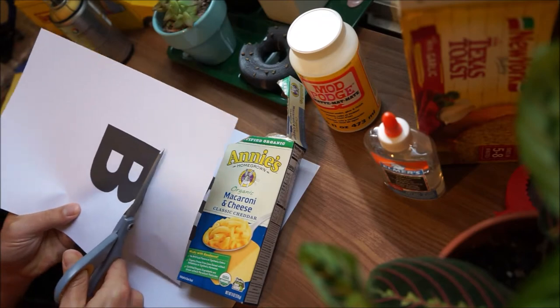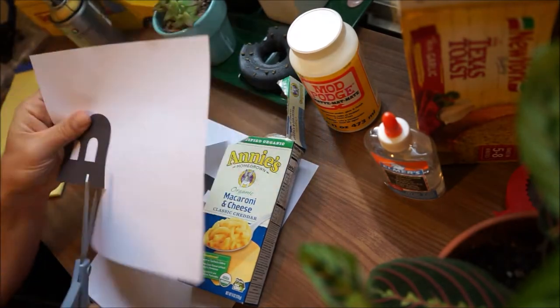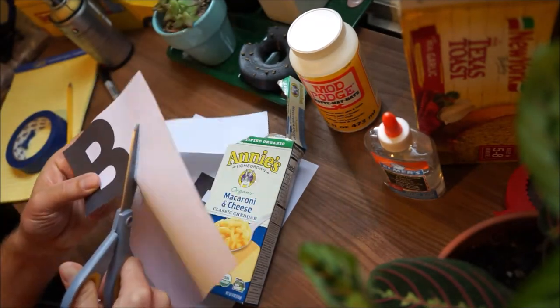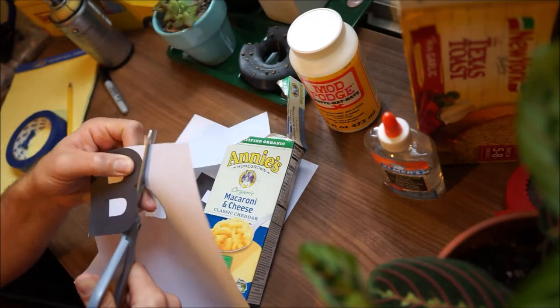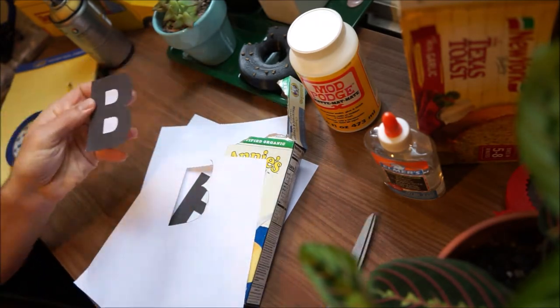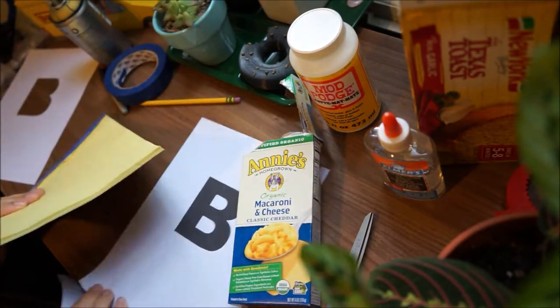So as you can see, you want to make sure that your B can fit all the way on the front of the box that you're going to be using. I'm going to use this smaller B and I'm going to cut it out. When you cut it out, you need to be very careful and as always ask permission before cutting anything out.